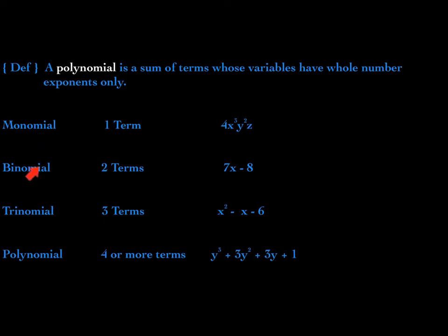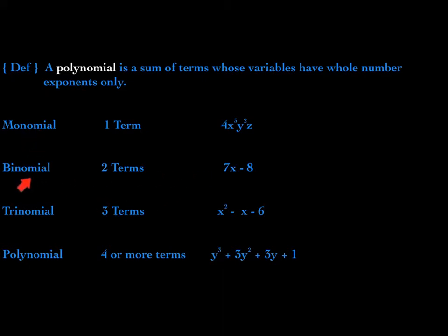A trinomial is a polynomial of three terms. x squared is the leading term, negative x is the second term, and negative 6 is the third term. Any polynomial that has four or more terms is just called a polynomial — poly meaning many. Keep in mind that all of these are polynomials. A monomial is a polynomial, a binomial, a trinomial are polynomials.